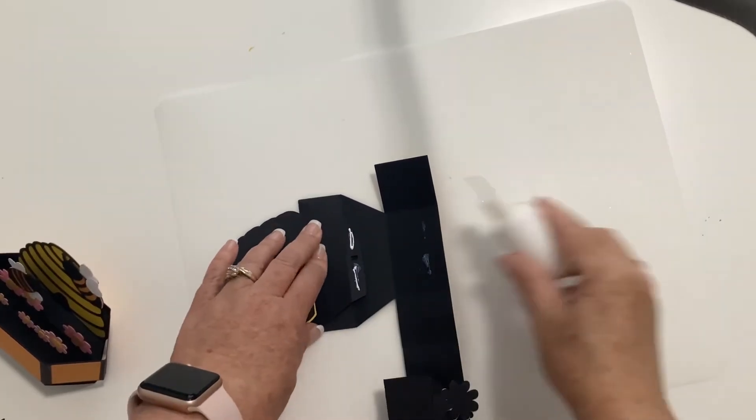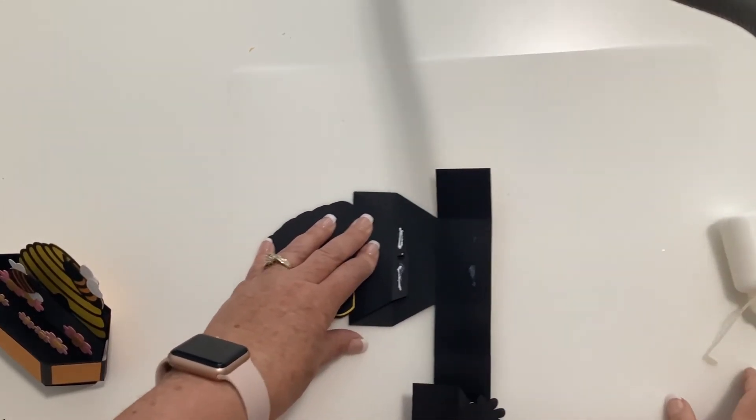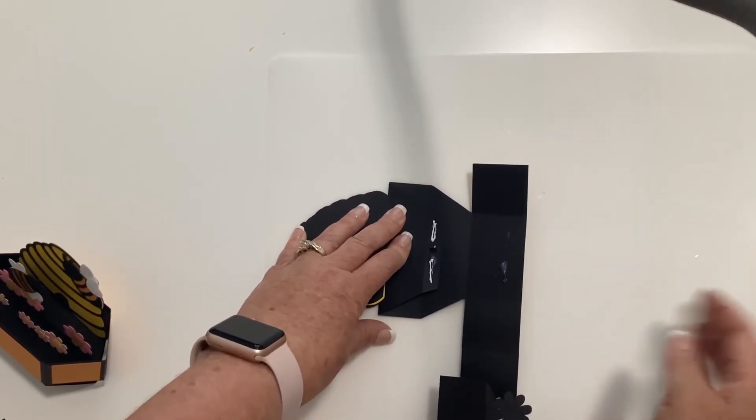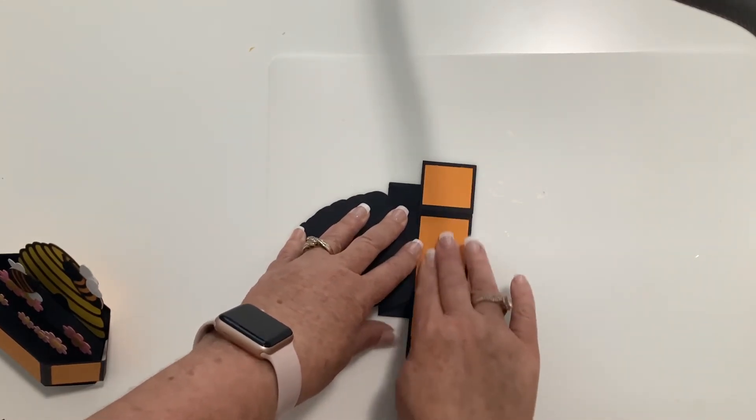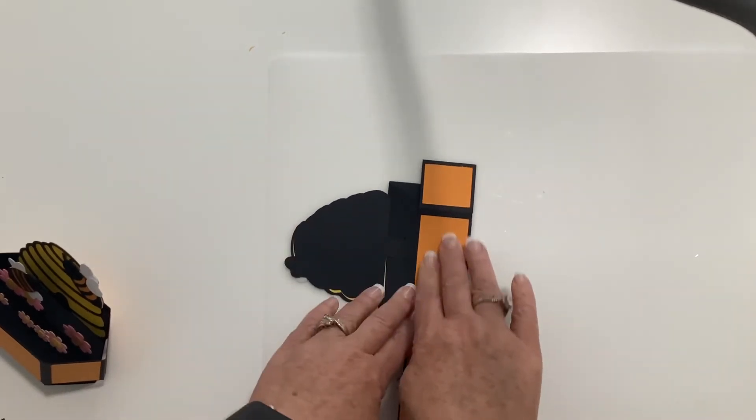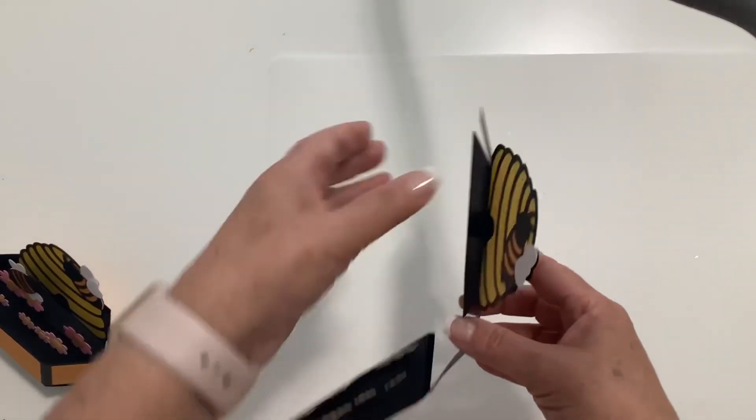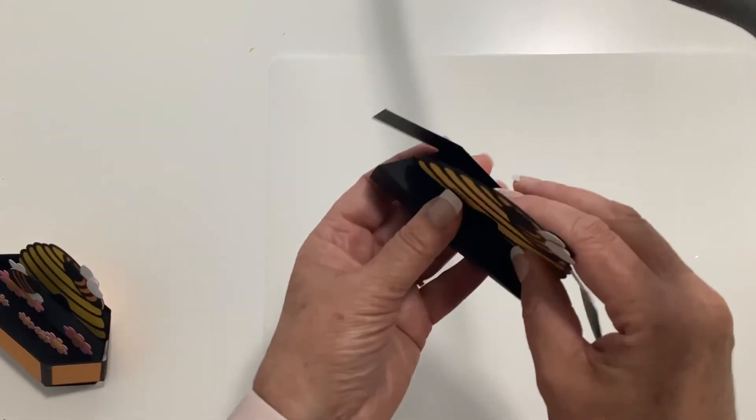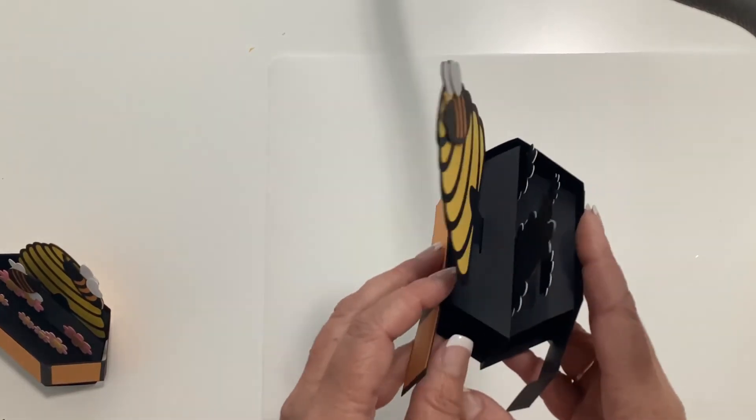Then we're going to take glue and we're going to put it right there on that tab. And then we're going to take this bottom piece and fold it up and just press. Okay, so then when that opens up, it opens up like that.